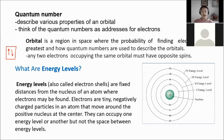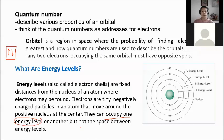Energy levels, also called electron shells, are fixed distances from the nucleus of an atom where an electron may be found. Electrons are tiny, negatively charged particles that move around the positive nucleus at the center. They can occupy one energy level or another, but not the space between energy levels.